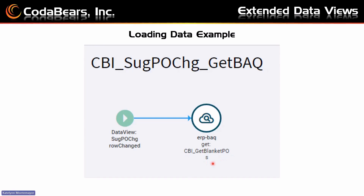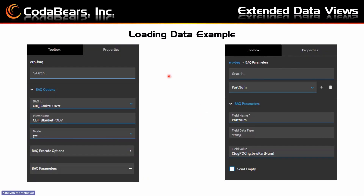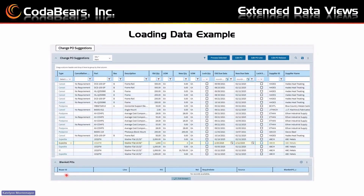This is the name of my BAQ that I called, and this is what those properties look like for that function. Pretty simple — you just put in the BAQ ID, you can drop down and choose it from there, then you put in the view name we had just created, and the mode is Get because we're pulling in that data. Because this is based on part number, I had a parameter on my BAQ, so I had to add that here as well — you go to BAQ Parameters, put the field name partnum, and put that in. That way it only gives you the blanket POs for that specific part number of the line you're on.